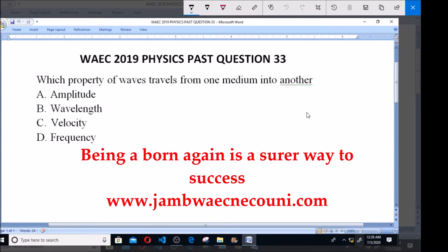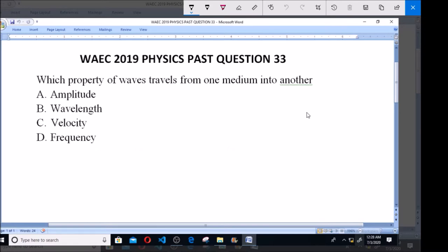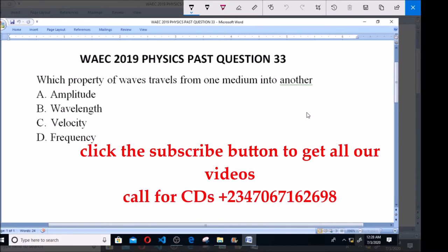The options are: A amplitude, B wavelength, C velocity, D frequency. Now let's define these various properties of waves so that we can know the one that fits the answer.